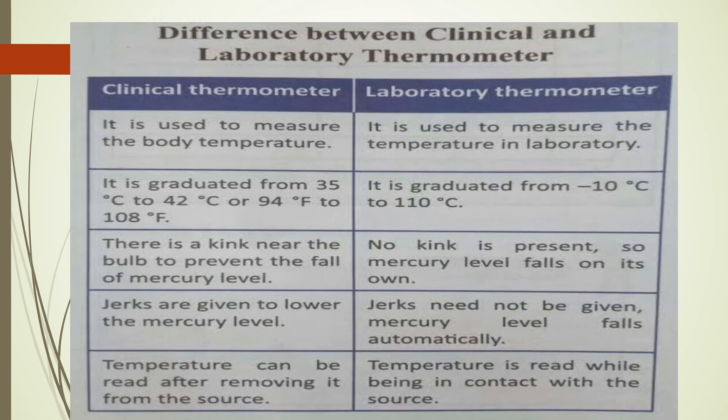In the laboratory thermometer, there is no kink near the bulb, so the temperature must be read while the thermometer is still dipped in the object. Because the clinical thermometer has a kink, you need to give it a jerk to lower the mercury level after taking a reading. For the laboratory thermometer, no jerk is needed — the mercury level falls on its own.